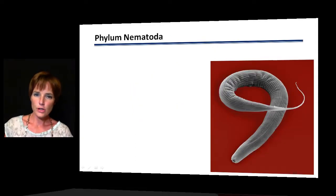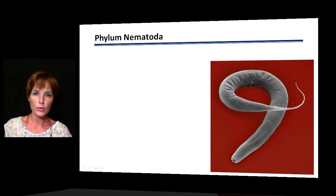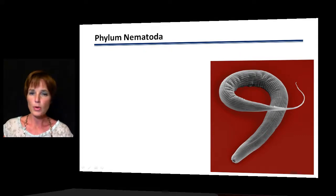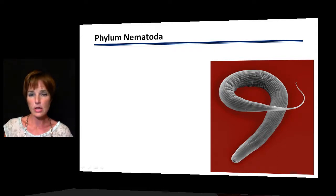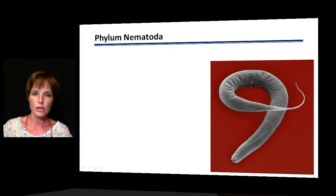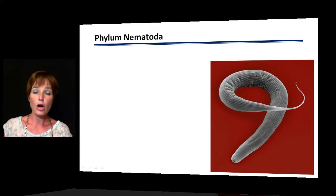The first phylum is Nematoda — the last group of worms we'll discuss. 'Worm' is a very generic term meaning a long, slender animal. We've covered three worm phyla: flatworms (Platyhelminthes), segmented worms (Annelida), and now nematodes (Nematoda). These are some of the most ubiquitous organisms — found everywhere in soil, freshwater, and marine environments.